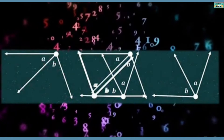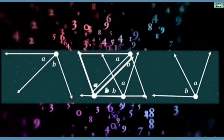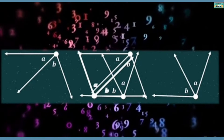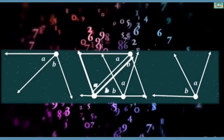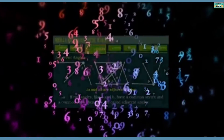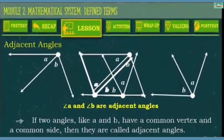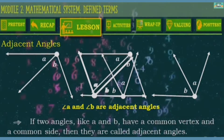How about these figures? Is this also an angle? Yes — as you can see, in each figure there are two angles. The two angles A and B have a common endpoint and a common side. So what do you think it is? This is what you call an adjacent angle. If two angles, like our example A and B, have a common vertex and a common side, then they are called adjacent angles.